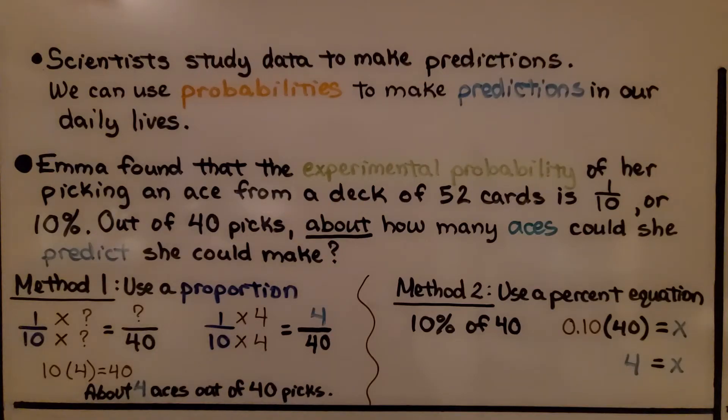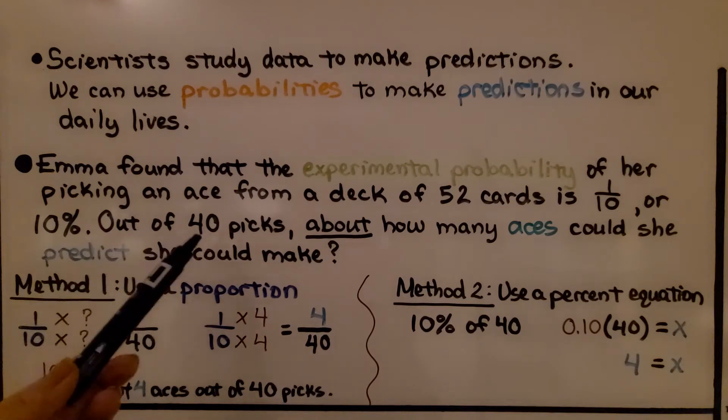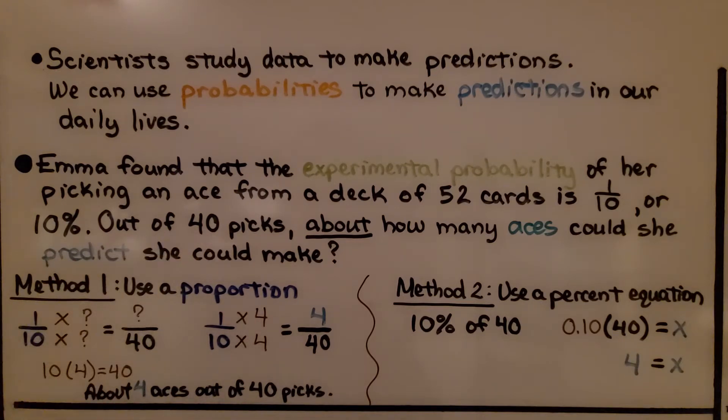Scientists study data to make predictions. We can use probabilities to make predictions in our daily lives. Emma found that the experimental probability of her picking an ace from a deck of 52 cards is 1/10 or 10%. Out of 40 picks, about how many aces could she predict she could make? So we have 2 methods. Here's method 1 and method 2. Method 1 is we're going to use a proportion. Method 2 is we're going to use a percent equation.